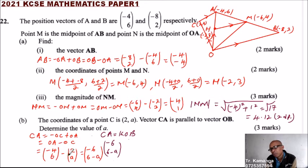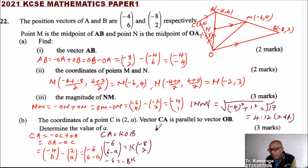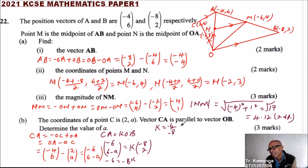We have CA = (-6, 6 - a) and this equals k times OB = k(-8, 2). Equating the x-components: -6 = -8k, so k = 6/8 = 3/4. That is the value of k.